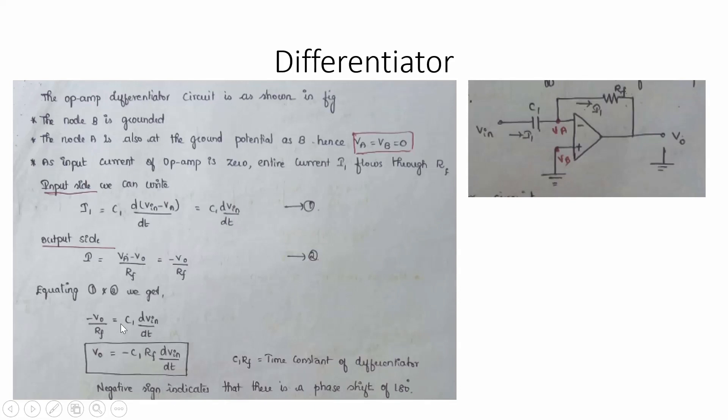Equating equations 1 and 2: −Vo/Rf = C1 × dVin/dt. Here we do not integrate both sides because Vo is already in direct form. Therefore Vo = −C1 × Rf × dVin/dt. The output voltage is the differentiation of the input voltage, and R·C is the time constant of the differentiator.